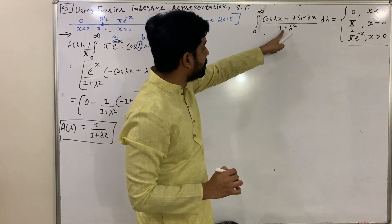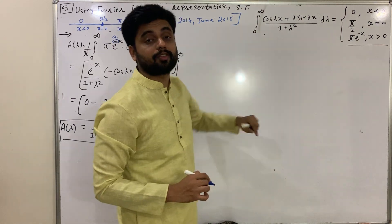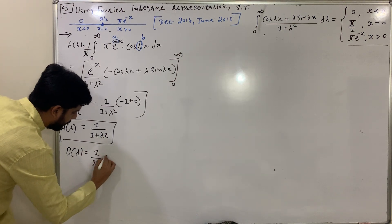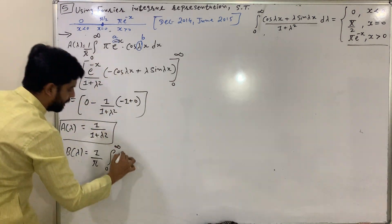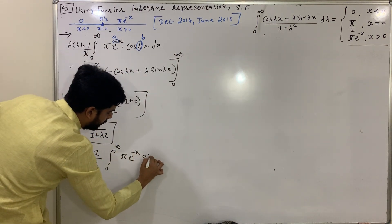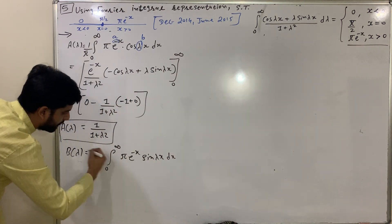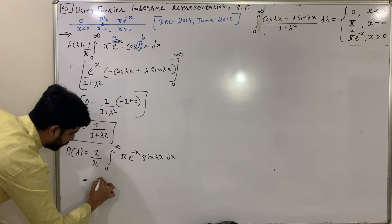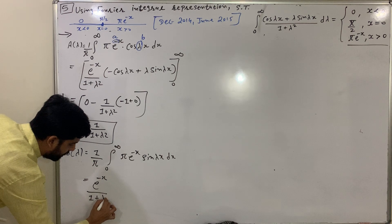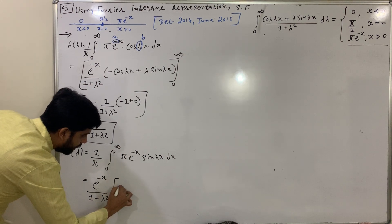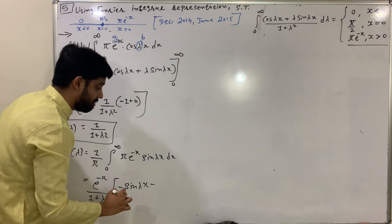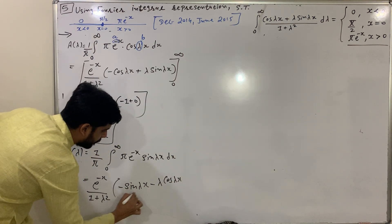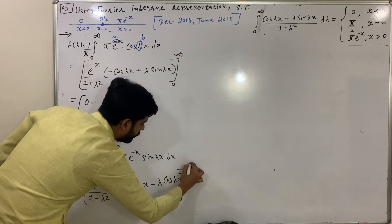Now for b(λ): the formula gives b(λ) = (1/π) integral from 0 to infinity of π·e^(−x) sin λx dx. The π cancels, so b(λ) = integral from 0 to infinity of e^(−x) sin λx dx. Using the formula e^(ax)/(a²+b²) · [a sin bx − b cos bx].